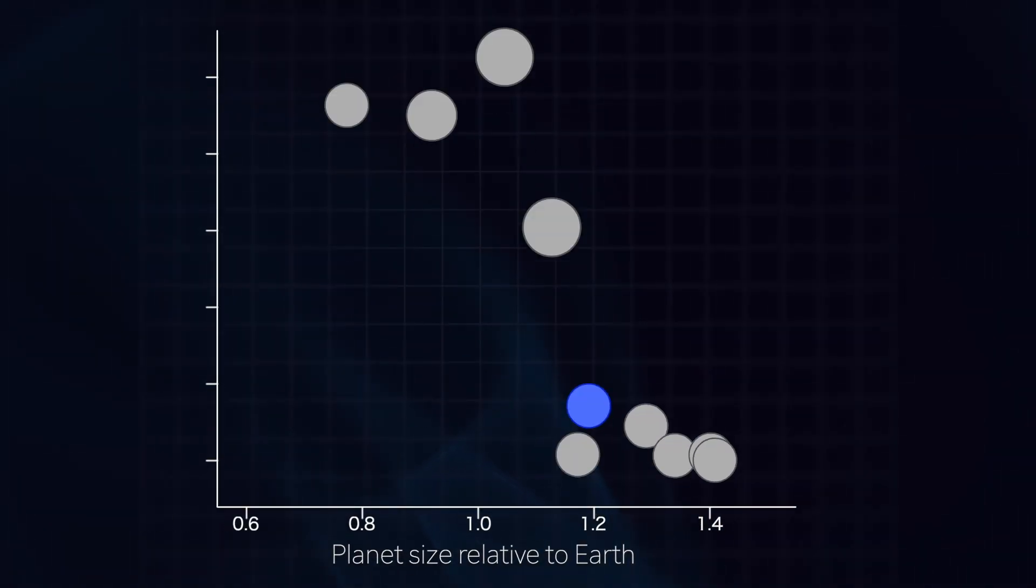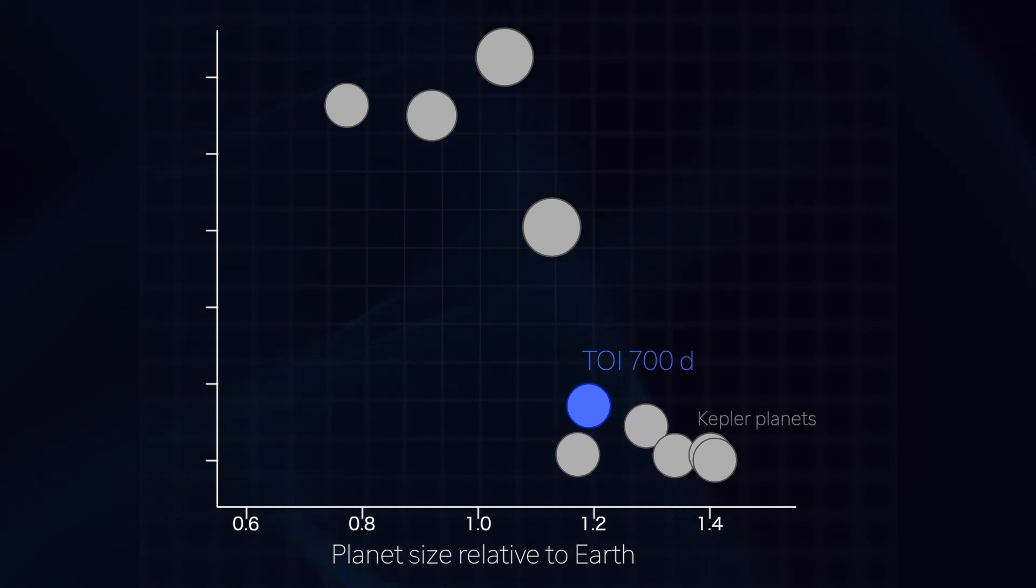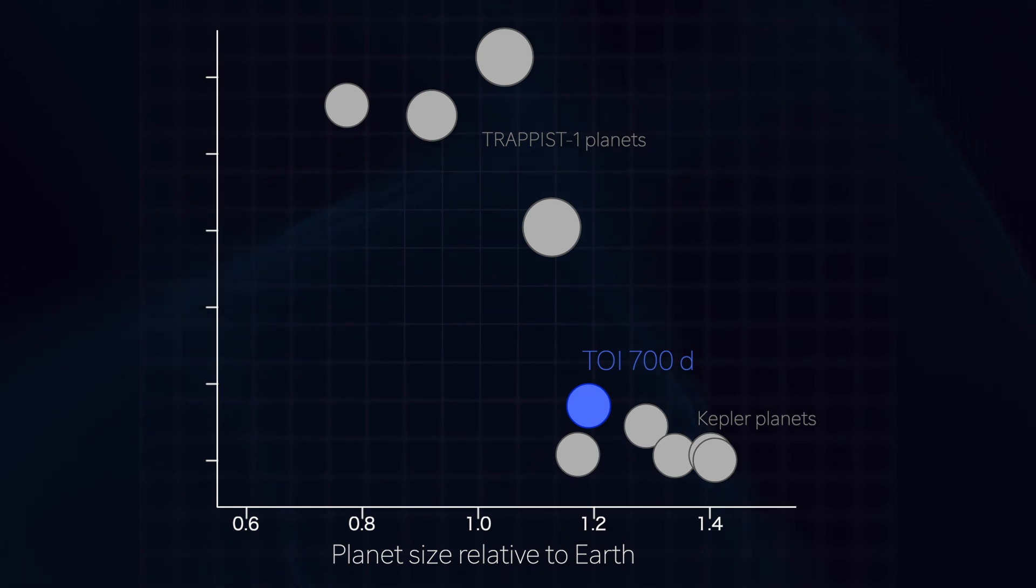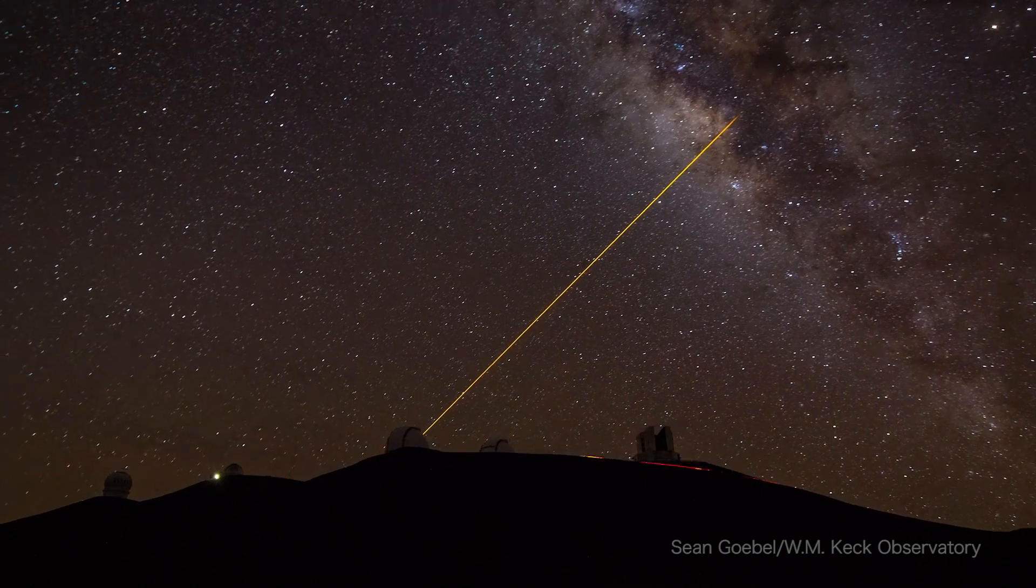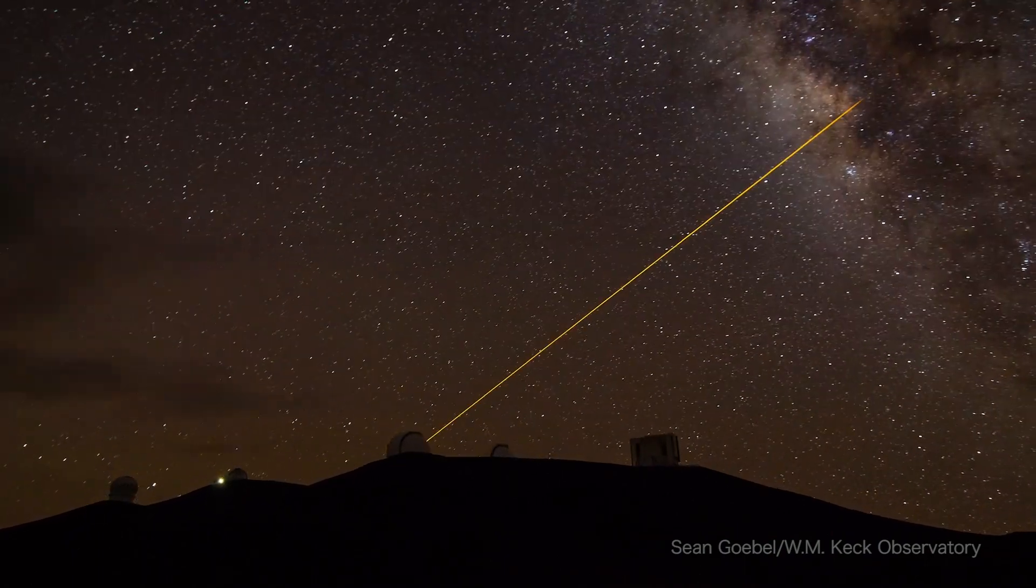TOI-700d is one of only a few Earth-sized planets found in potential habitable zones. Others include discoveries by Kepler and several planets in the TRAPPIST-1 system. Because TOI-700d is bright and nearby, the planets are good candidates for precise mass measurements by ground-based telescopes.